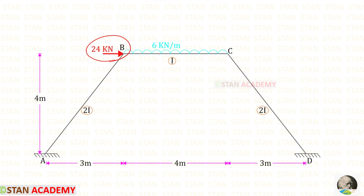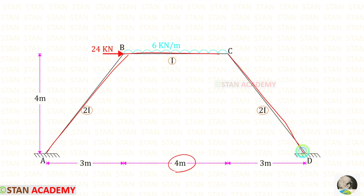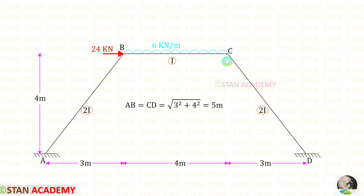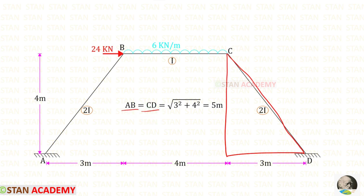So in this frame the sway will occur towards the right side. This frame is symmetrical with respect to dimensions. The length of BC is 4 meters. We need to find the inclined length of AB and CD — both will be the same. Using Pythagoras' theorem on the triangle with base 3 meters and height 4 meters, we get the inclined length as 5 meters.